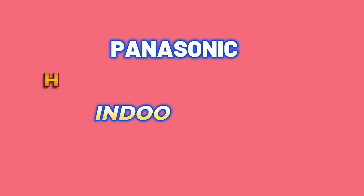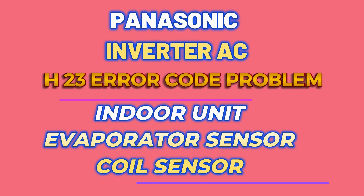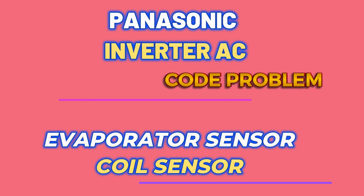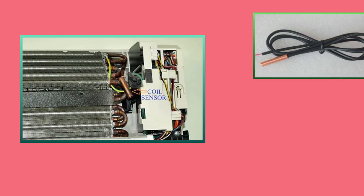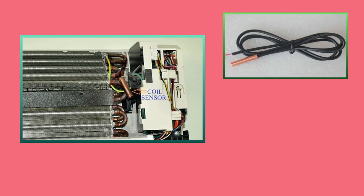If H23 is coming in a Panasonic AC, then it is the error of the evaporator sensor. In simple words, it can be called a coil sensor. This sensor is installed in the coil of the indoor unit.